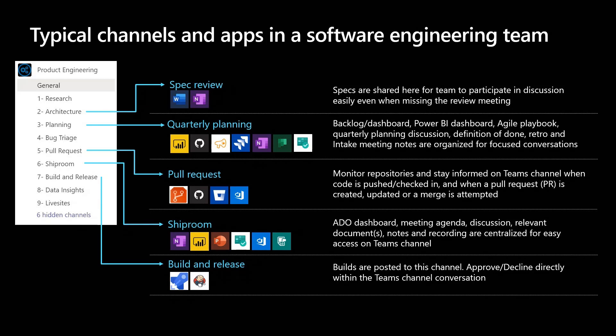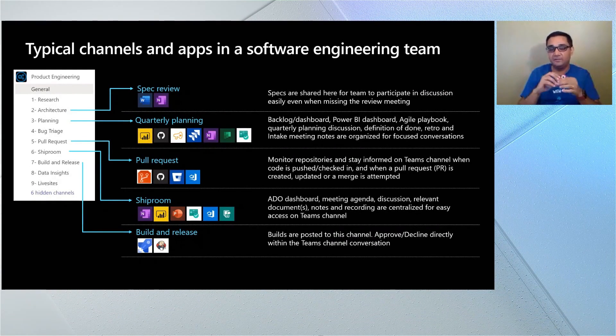In the Shiproom channel, you're thinking about stuff that's in the pipeline being worked on — dashboards to look at bugs and status from Power BI, Azure Boards, or Jira, and OneNote to organize Shiproom meetings. For a build and release channel, you can set up apps to post into the channel when a new build is happening, so you have one place to figure out what's happening. You can set up Azure Pipelines and Jenkins as well.